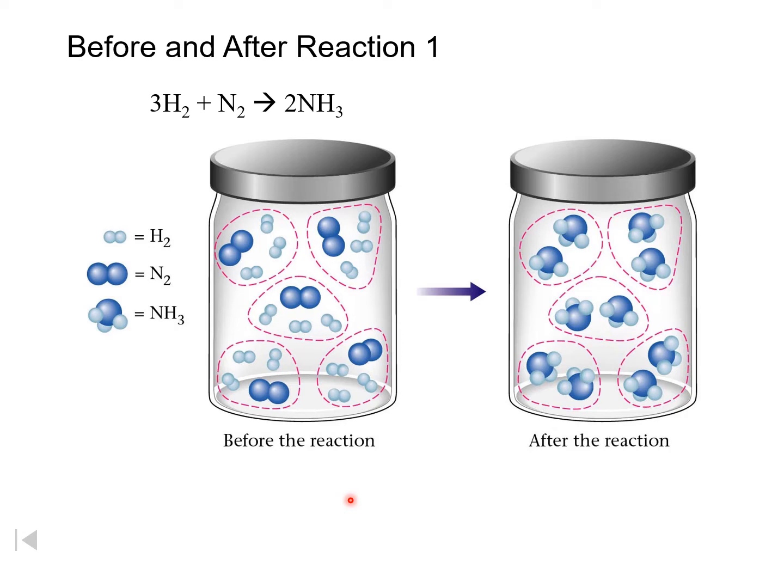The reaction proceeds according to the equation 3H2 plus N2 to form 2NH3. The proportion is 3 is to 1 is to 2. Since there are 15 H2, kung bilangin natin, 15 H2, and 5 N2, how many NH3 do we produce? We produce 10 NH3. It still follows the 3 is to 1 is to 2. So it's 15 is to 5 is to 10. All the hydrogen and nitrogen atoms combined.